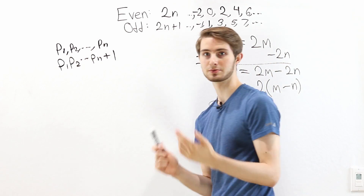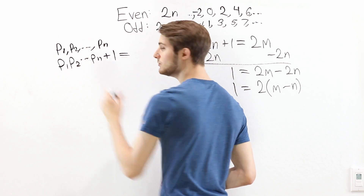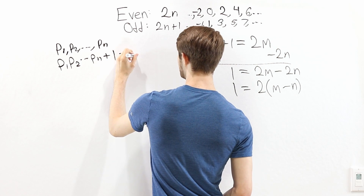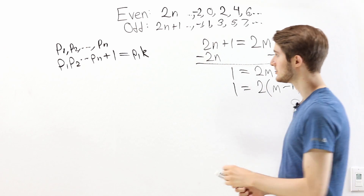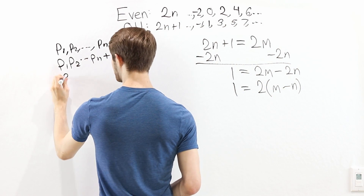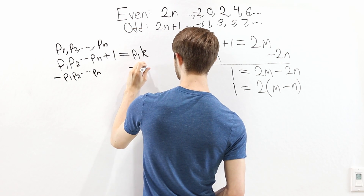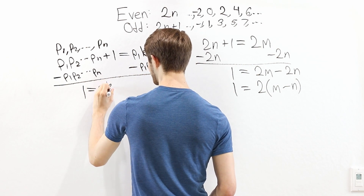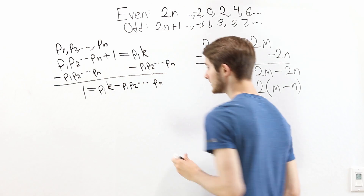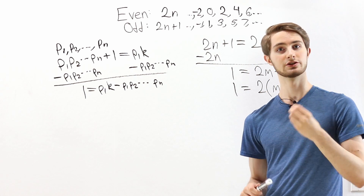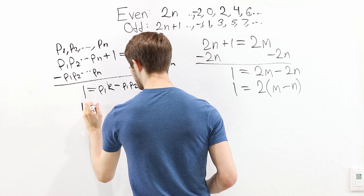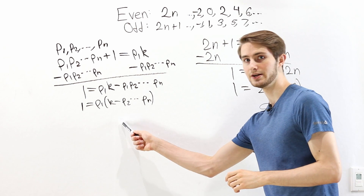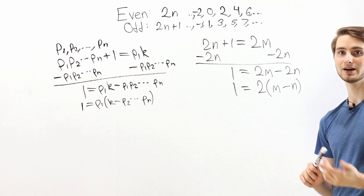It has to have one of these numbers as a prime factor. Let's suppose this number has p1 as a prime factor — we could always switch the order later. If that's true, then we can write this number as p1 times some whole number k. Now let's subtract the product p1·p2·...·pn from both sides. On the left side we get 1, and on the right side we get p1·k minus p1·p2·...·pn. Both terms on the right have a factor of p1, so we factor that out: 1 equals p1 times (k minus p2·...·pn).